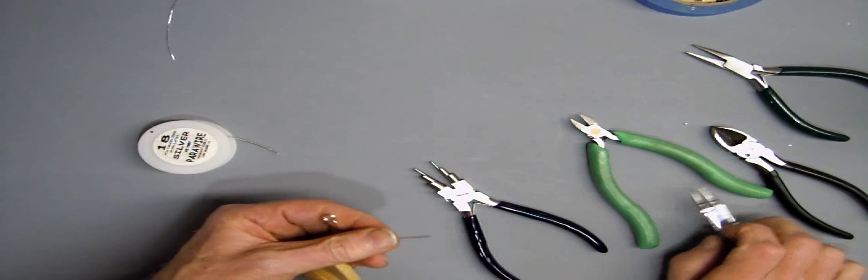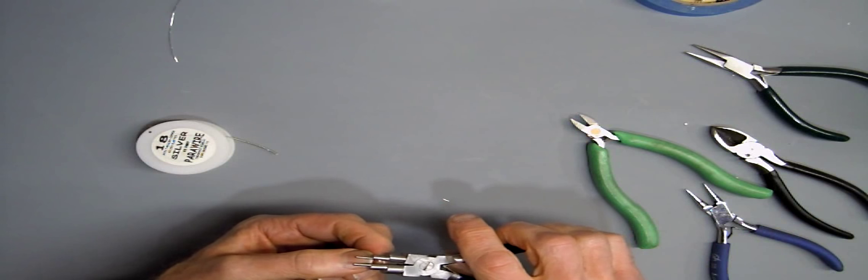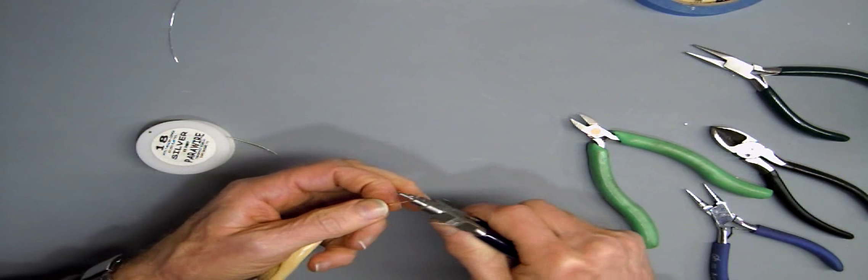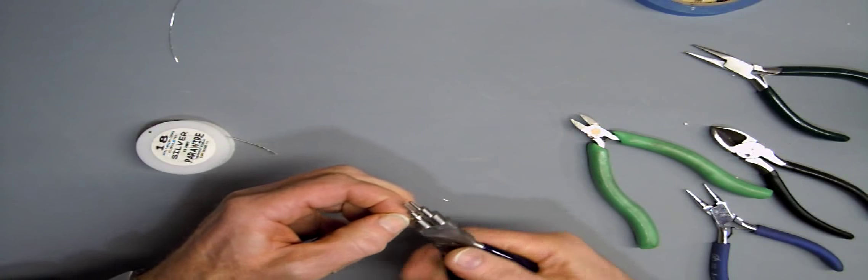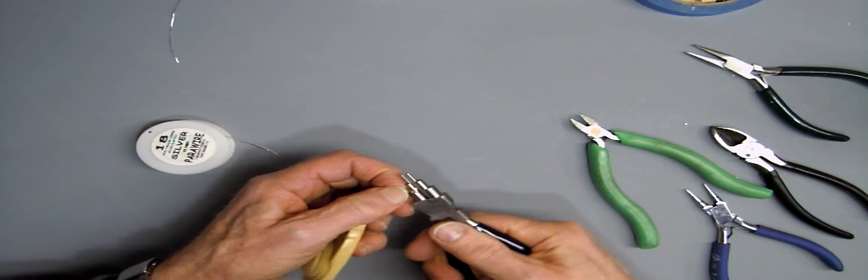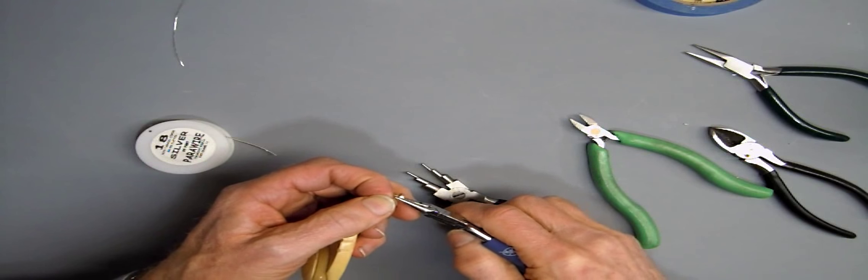Then the taper pliers allow me to line it up. When you're making the other one, you just keep twisting, release, twist, release, twist until you've got a circle. And adjust the angle of the circle.